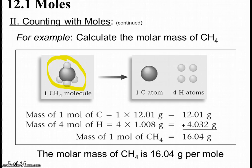Then with rounding, the mass of one mole of CH4 is 16.04 grams. Because that's one carbon and four hydrogens. So we would say the molar mass is 16.04 grams per mole.